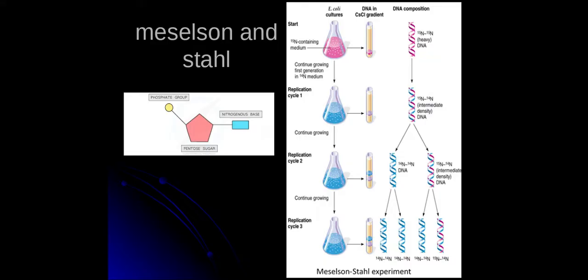What they did is they grew bacteria E. coli in a nitrogen-15 medium. When the DNA was duplicated as the cells replicate, they create new DNA. Don't forget DNA has these components made up of it - it's made of nucleotides.